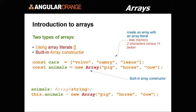There are advantages and disadvantages of using both. The array literal uses less memory — it's like two characters versus eleven characters. Typically, the array literal is useful for examples, demos, and learning. However, when building production code, I use the built-in array constructor because I like dynamic data.